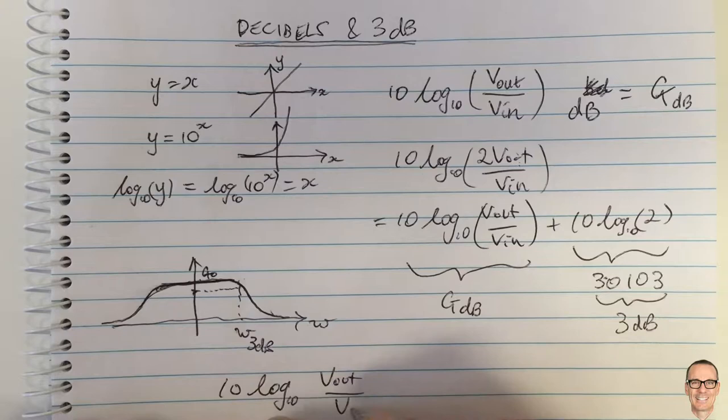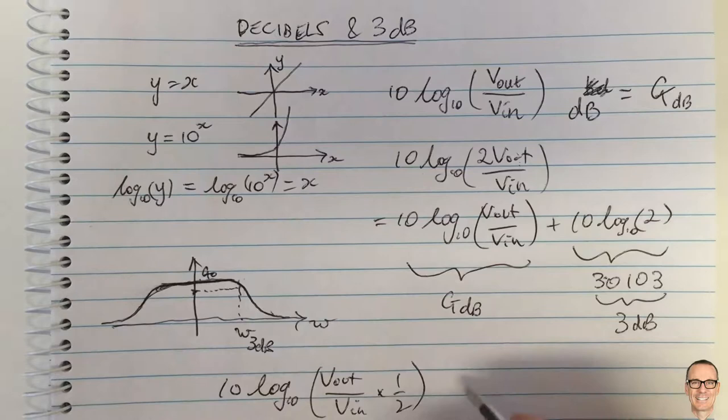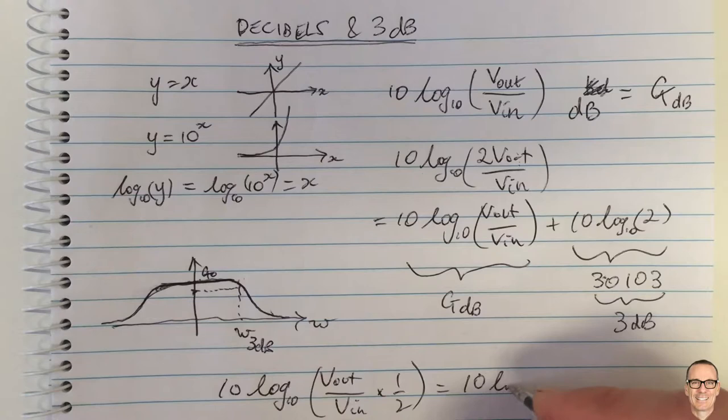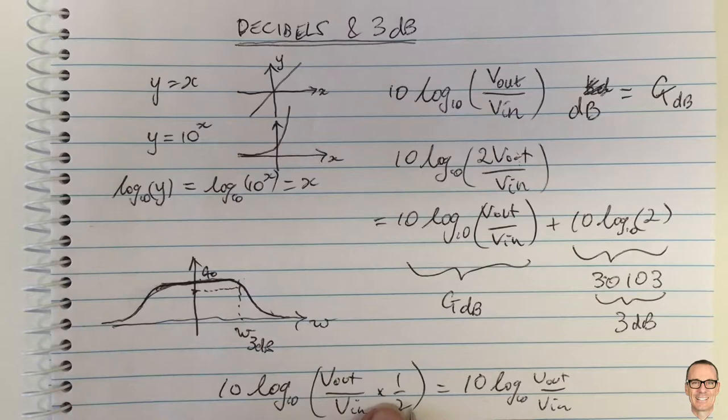...then this equals I'll do it all out in longhand log to the base 10 V out on V in and if you're multiplying by a half then you're...